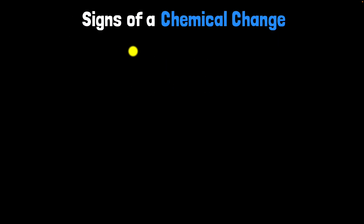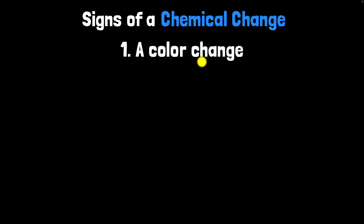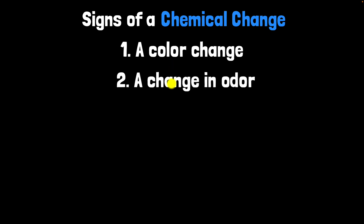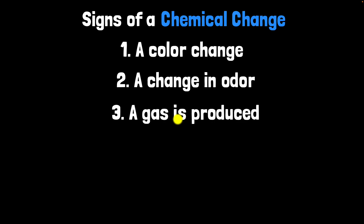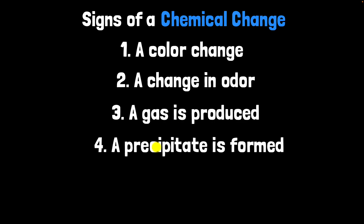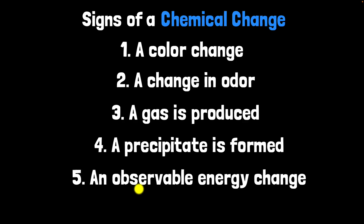Now, the last question: are there some telltale signs that a chemical change has happened — that a new substance has been formed? The answer is yes. There are five common signs: a color change, a change in odor, a gas being produced, a precipitate forming, and an observable energy change. Let's go through these one by one.